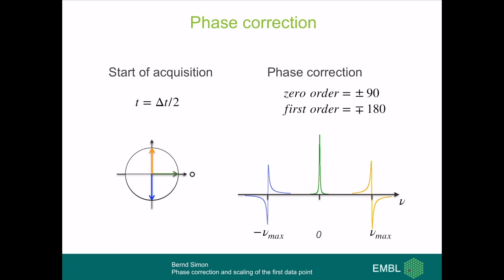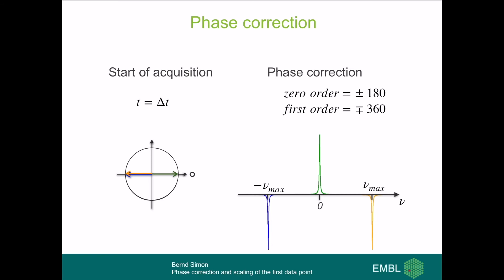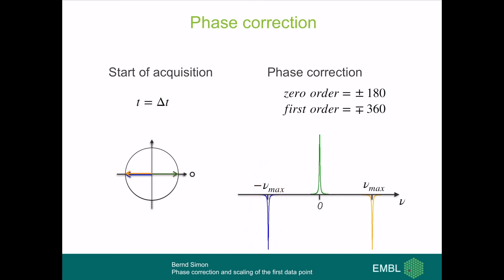Depending on the software convention, we either perform plus 90 degrees zero-order with minus 180 degrees first-order, or minus 90 degrees zero-order with plus 180 degrees first-order phase correction. At T equal to one dwell time, the fastest and slowest spins have moved 180 degrees, so they appear as negative absorption, and the peaks in between have a mixed line shape. Again, we apply a plus 180 / minus 360 phase correction, or the opposite sign depending on the software convention.